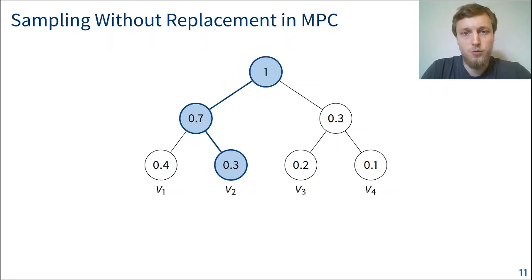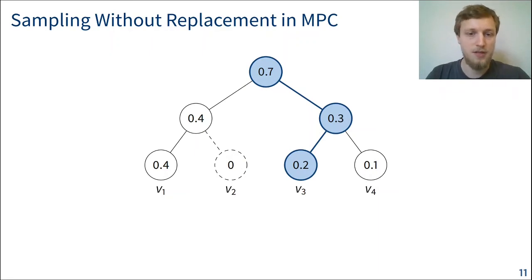And now we have to make sure that we're not going to sample that value again. We want to sample without replacement. So the way we're going to do it, we're just going to subtract the value that's written on the leaf we just sampled, from all the nodes to the path to the root. So this would be the result. And now the next time we sample something, it's going to be a different leaf. For example, leaf V3 this time. As you can see, the leaf V2 is deactivated. Its probability is set to zero. It cannot be sampled again.